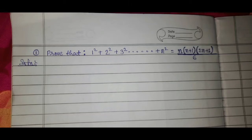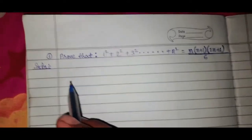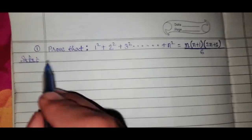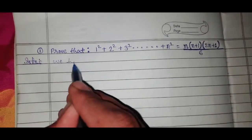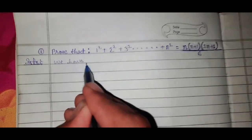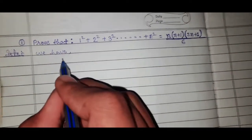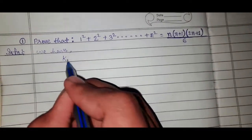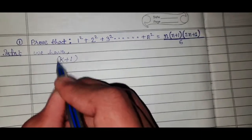Hello friends. As camera new questionnaire, we have to prove that 1² + 2² + 3² + ... up to n² is equal to n(n+1)(2n+1)/6. So let's start.